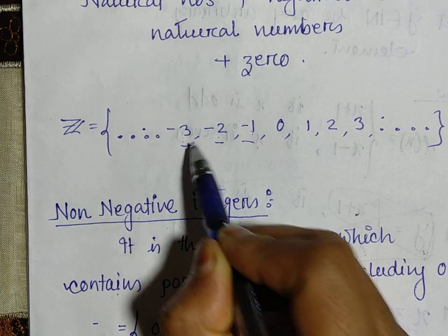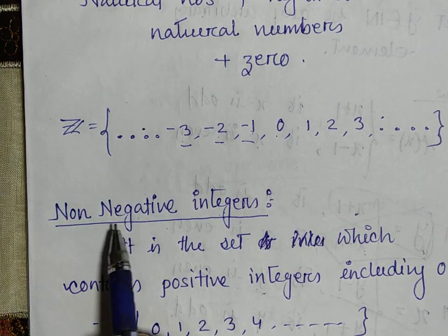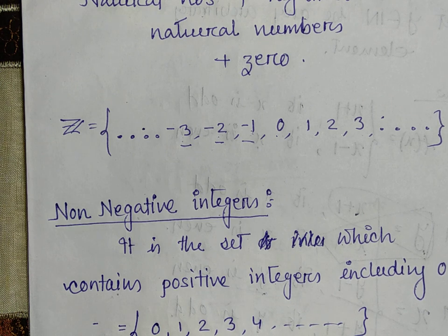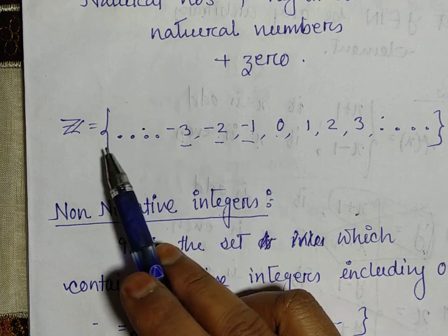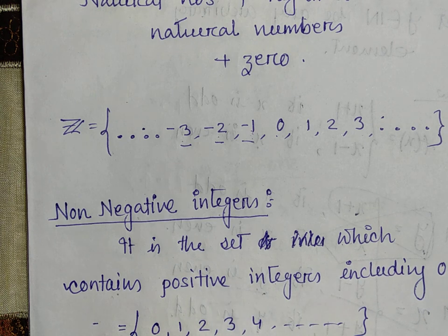The remaining elements after excluding the negatives will be from 0 to plus infinity. That's why whenever you write down non-negative integers, you start with 0, then all the natural numbers. Whole numbers are also known as non-negative integers. So the whole number set is the set of non-negative integers.